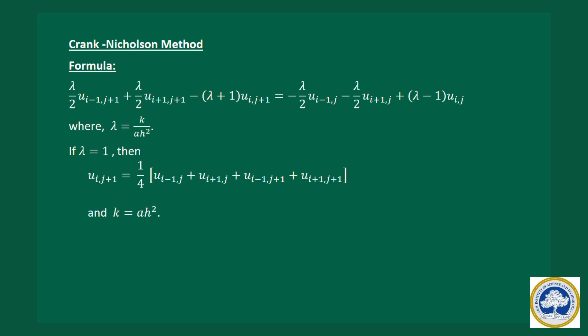In this video let us see the Crank-Nicolson method. The formula is: lambda/2 * u(i-1, j+1) + lambda/2 * u(i+1, j+1) - (lambda+1) * u(i, j+1) = -lambda/2 * u(i-1, j) - lambda/2 * u(i+1, j) + (lambda-1) * u(i, j), where lambda is equal to k divided by a*h squared. This is the general formula for the Crank-Nicolson method for any value of lambda.